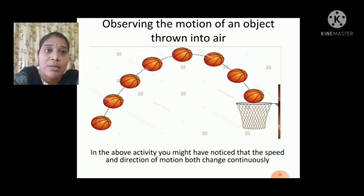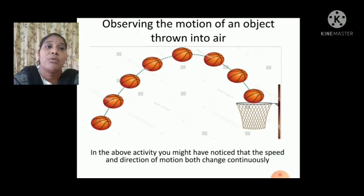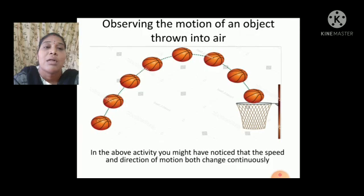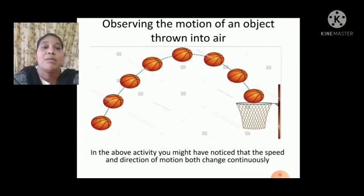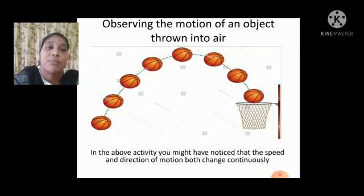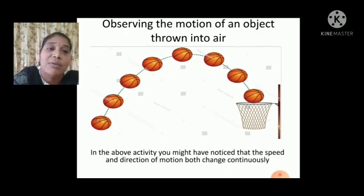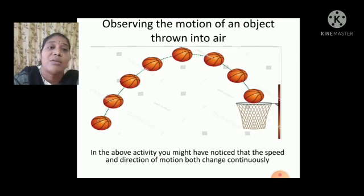The next activity is observing the motion of an object thrown into air. I have taken one ball and thrown it into a basket. If you look into this picture, you can notice that the speed gradually decreases to reach the basket, and also the direction changes. In this activity, you might have noticed that the speed of the ball as well as the direction both change simultaneously according to their positions.